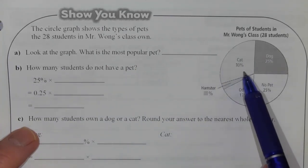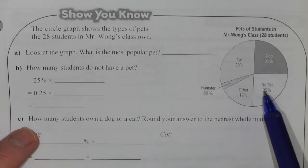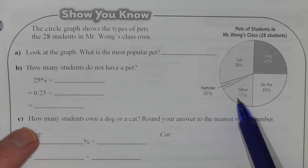we've got 30% for cats, that's our largest piece. We also have 25% for dogs, 25% for no pets, 17% for other, which could be fish, snakes, gerbils, rabbits, whatever.